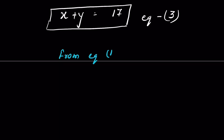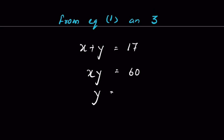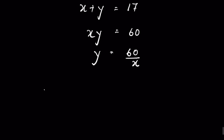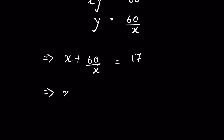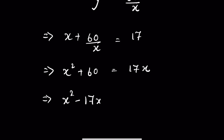From equations 1 and 3 we have X plus Y equals 17 and XY equals 60. So Y equals 60 upon X, and substituting: X plus 60 upon X equals 17, or X squared plus 60 equals 17X. Rearranging: X squared minus 17X plus 60 equals 0.